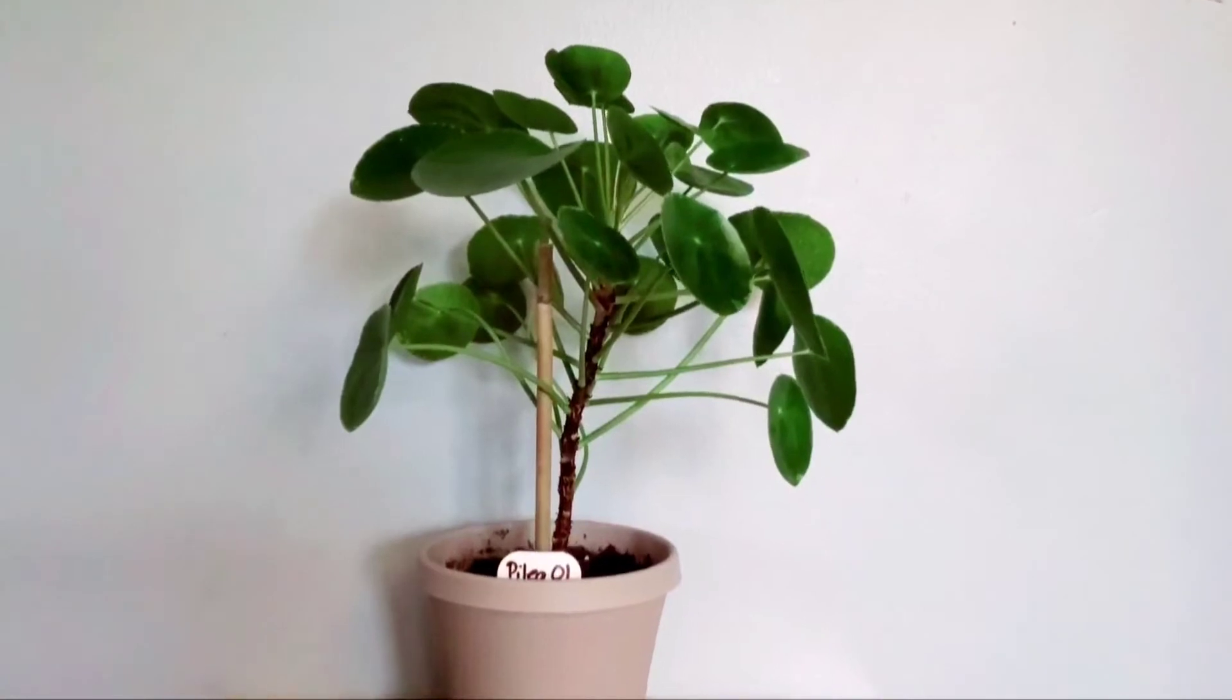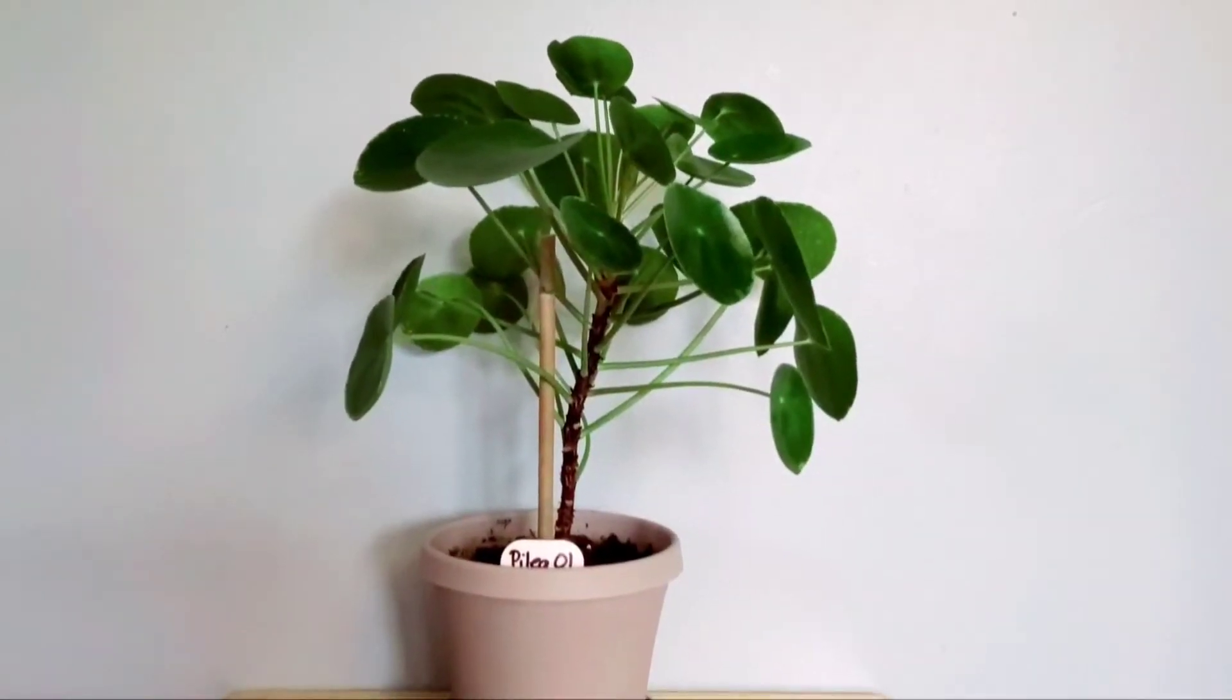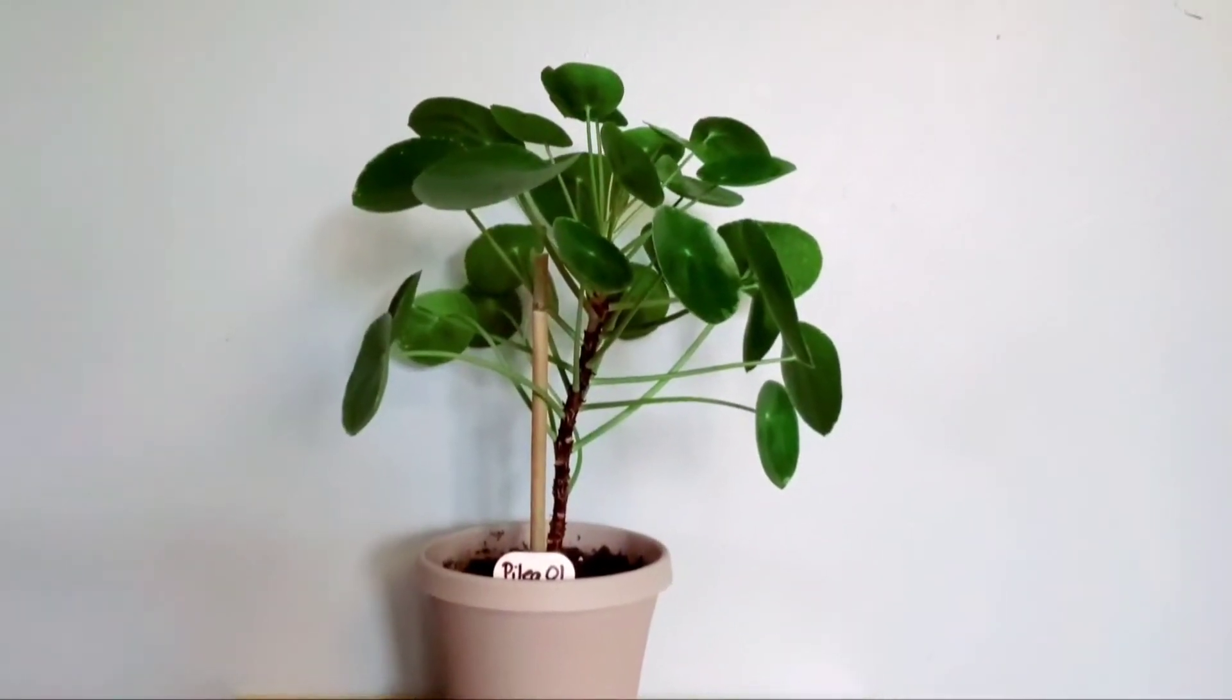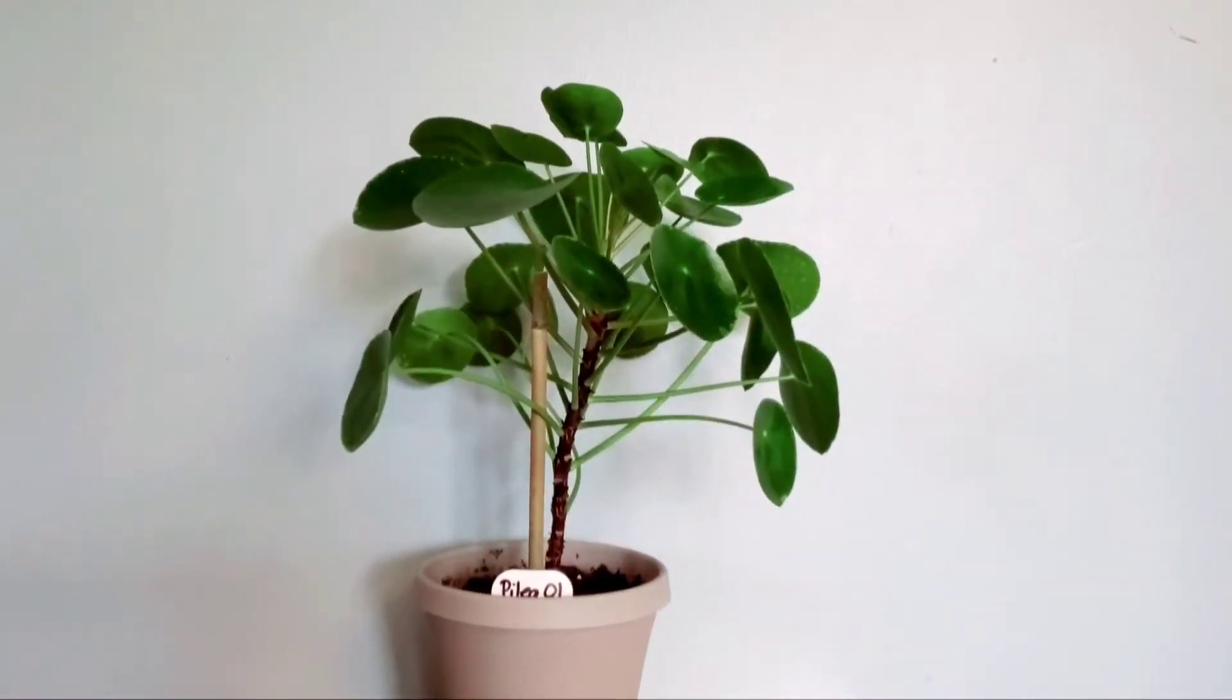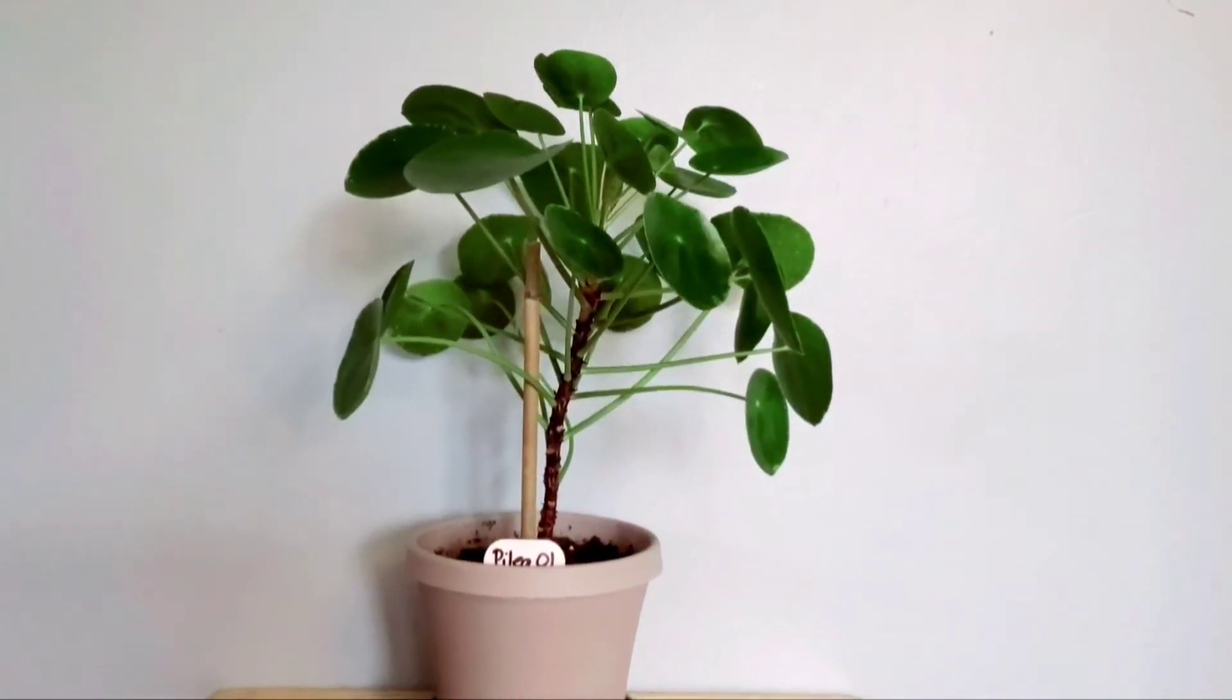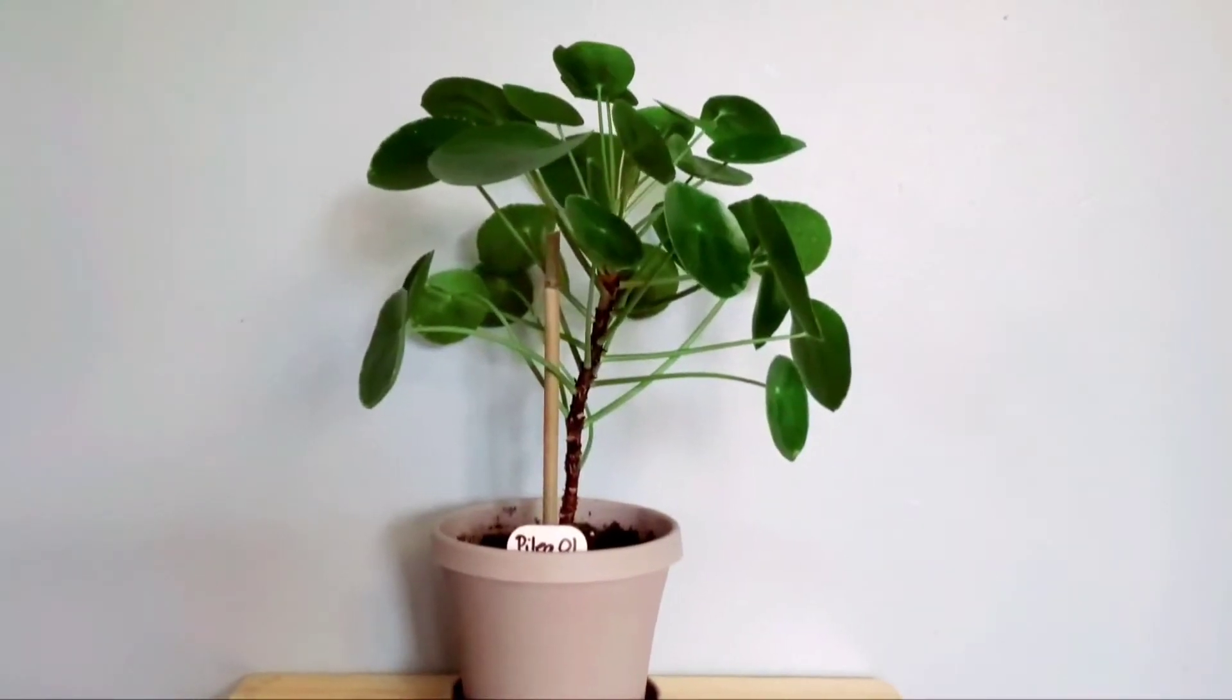This one sits about a foot to a foot and a half away from a west-facing window. It gets, I would say, 80% bright light from the west-facing window because the light comes in diagonally and she is more on the darker end of it. She does get more direct light from a north light, which is only a few months out of the year.